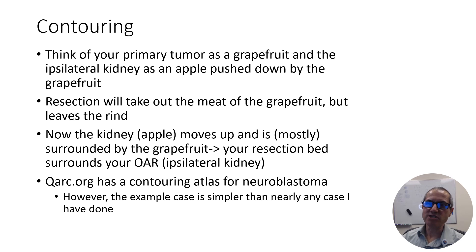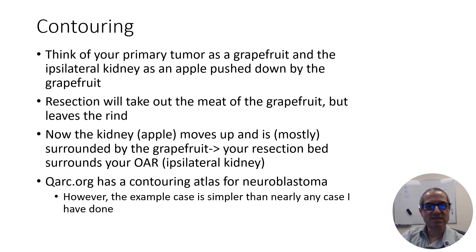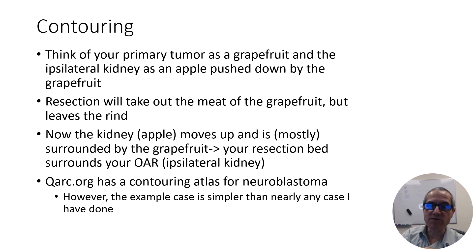In terms of contouring, I'll use a slightly unusual analogy that I hope is helpful. Imagine that the adrenal neuroblastoma is a grapefruit or very large orange that is pushing down an apple, where the apple represents the kidney. When the surgeon resects the tumor, she effectively leaves behind a rind of the grapefruit or orange, into which the apple now moves superiorly. That represents the gross tumor volume — the GTV — onto which we add a CTV. It effectively surrounds much of the kidney, and one can look at the preoperative imaging to determine exactly how far around that kidney, which has now moved cranially, the target volume should extend.